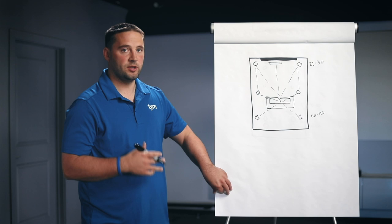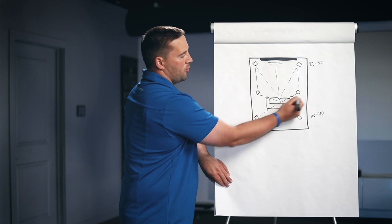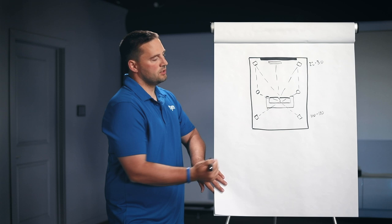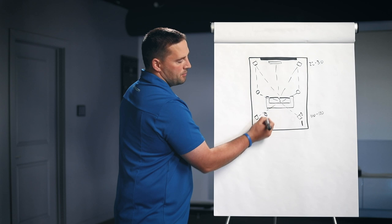So, five surrounds, a subwoofer is the .1, and then the .2 are the two Atmos speakers. You could do a 5.1.4. So, if the room was big enough, you could move these surrounds back a little bit, and you could drop in two Atmos, and you would have a 5.1.4. That's perfectly acceptable.